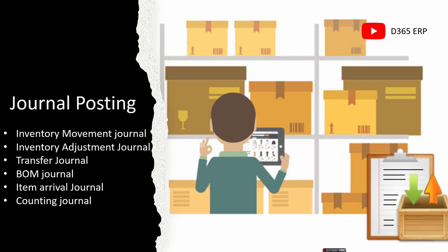After the transfer order process, we will move to journal posting. We will cover multiple journal types: we will start with the inventory movement journal, then the inventory adjustment journal, transfer order journal, bill of materials (BOM) journal, item arrival journal, and finally the counting journal. We will create a dedicated episode for each journal and demonstrate all steps with real data in the system.